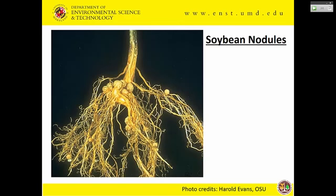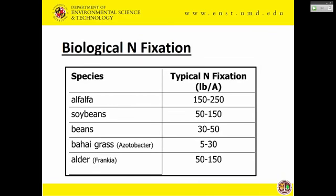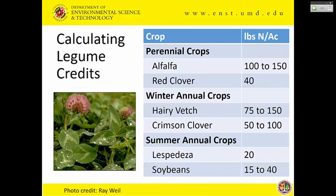This is an example of soybean nodules — this is where nitrogen fixation happens. In some crops such as alfalfa and soybean, quite a bit of nitrogen can be fixed, which is a good thing. It means we don't have to fertilize these crops to the same extent as non-legumes. When these crops are grown in rotation, you can calculate the legume credits — meaning this crop will provide nitrogen for subsequent crops. It's a great way to utilize legumes in the cropping system.